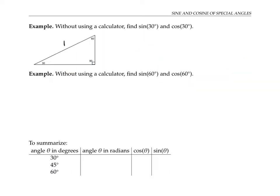To find the sine and cosine of 30 degrees, let's use a 30-60-90 right triangle with hypotenuse one. If we double the triangle, we get an angle of 30 here, a total angle of 60 degrees here, and this angle is also 60 degrees. So we have a 60-60-60 triangle — that's an equilateral triangle, and all side lengths are the same. Since this side length has length one, this side length is also one. This entire side length is one, which means the short side of our original triangle has length one half.